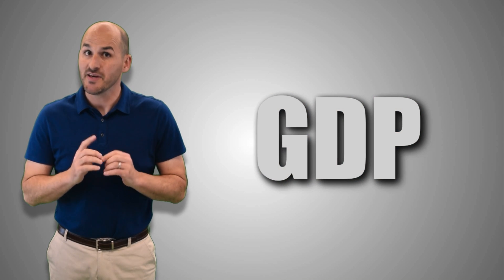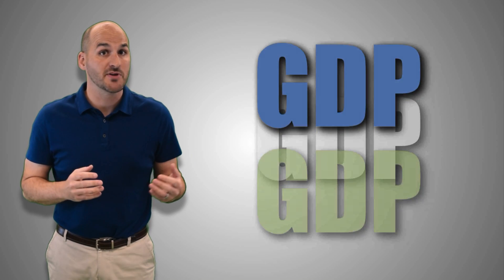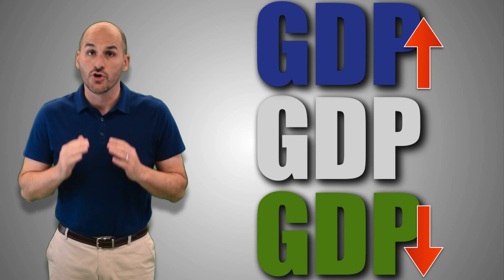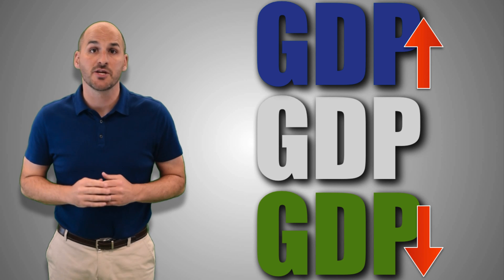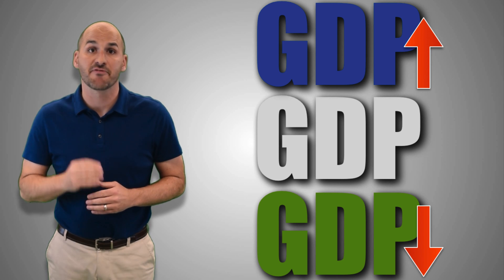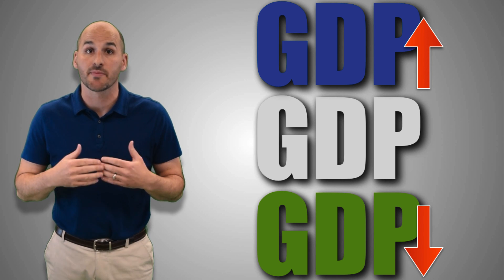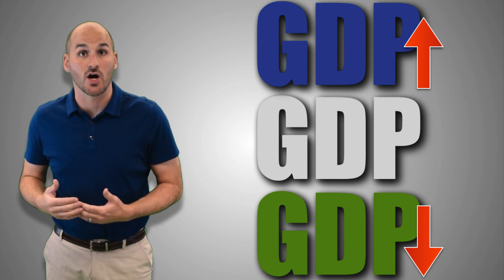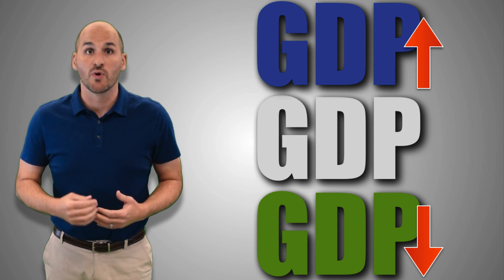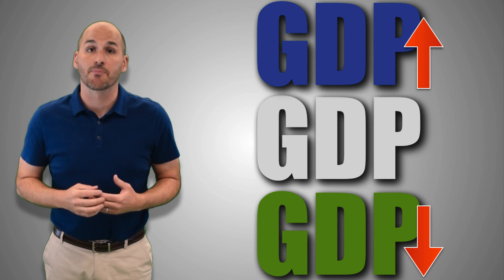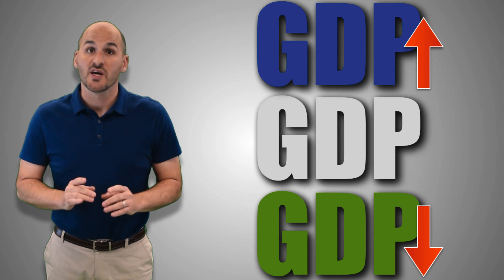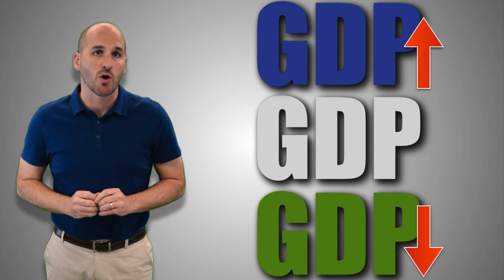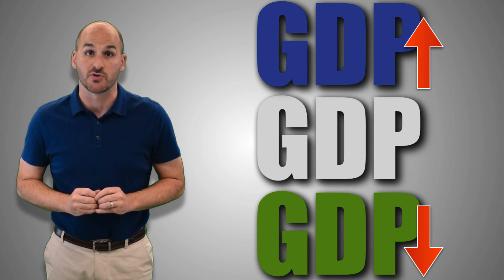But GDP can be deceiving. It may appear to be doing one thing, but actually might be doing another. Using inaccurate GDP data can provide false conclusions about how an economy is doing, and therefore misguide economists and policymakers, which can make economic problems worse. So it's really important to use the most accurate GDP data possible.